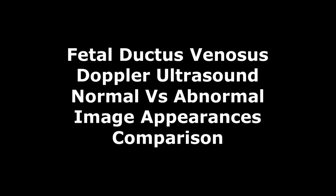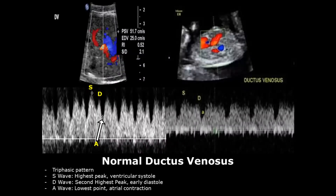Hello everyone, this is Dr. Sam, and today we will study ductus venosus Doppler ultrasound. The ductus venosus connects the umbilical vein to the inferior vena cava. It carries oxygenated blood and bypasses the liver circulation. It has a triphasic pattern on spectral Doppler and exhibits forward flow, with three specific points on this pattern.